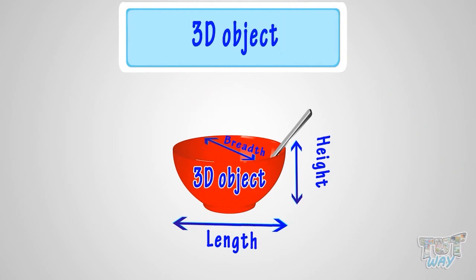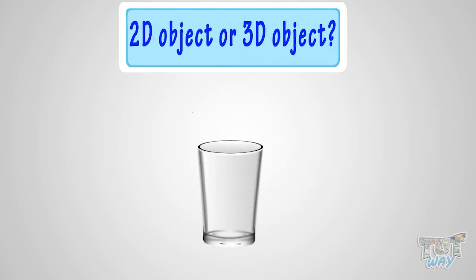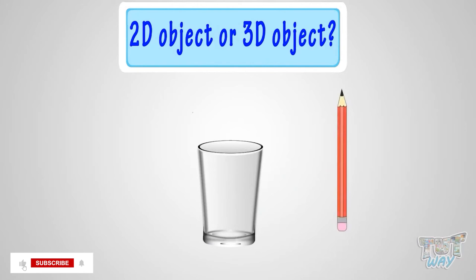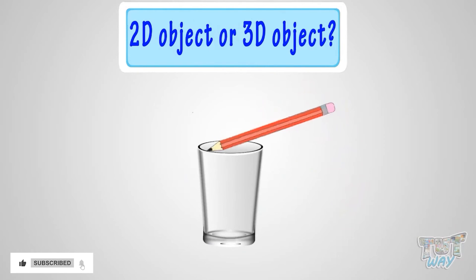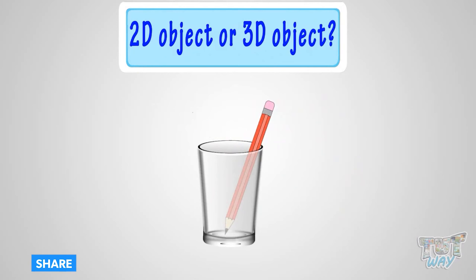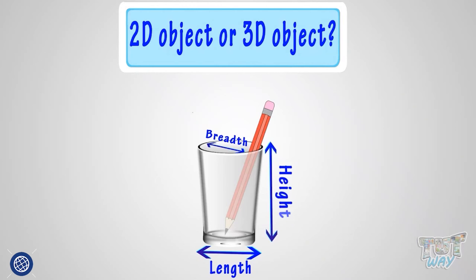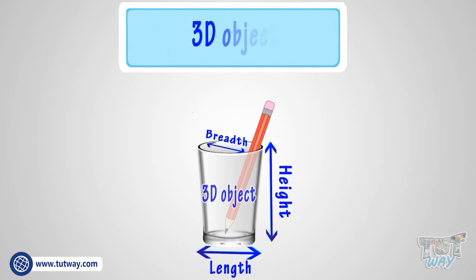Now we have one more object. We have to tell: is it a 2D object or a 3D object? Can we put something in this object? Yes, we can put something in this object. How many dimensions does it have? It has length, breadth, and height. So, it's a 3D object.